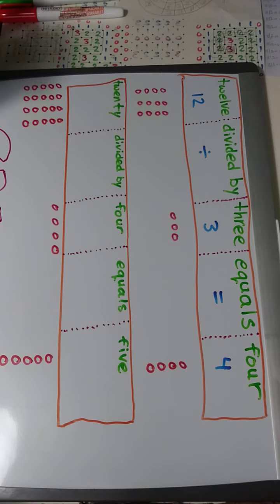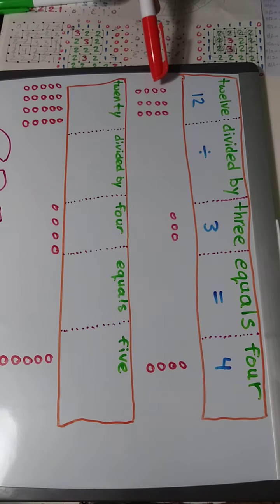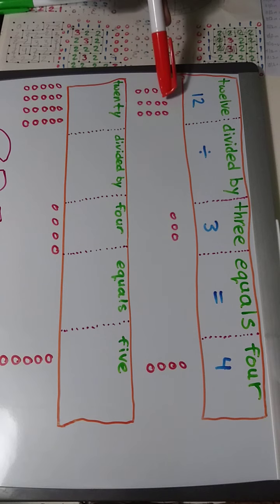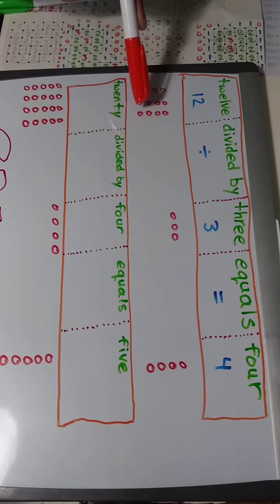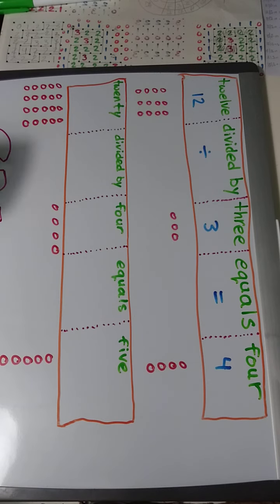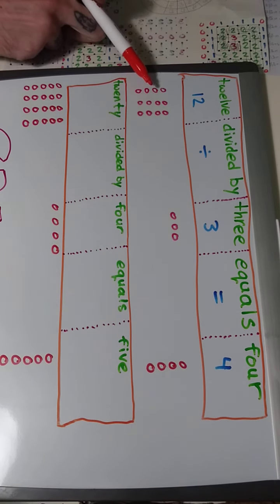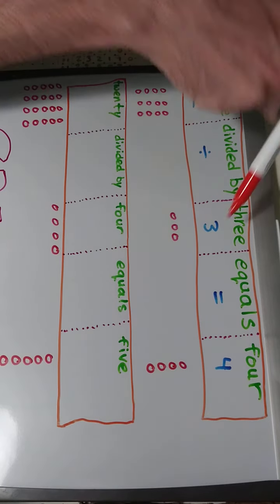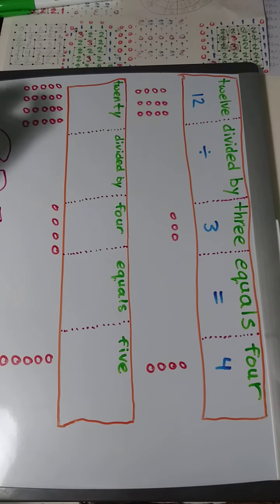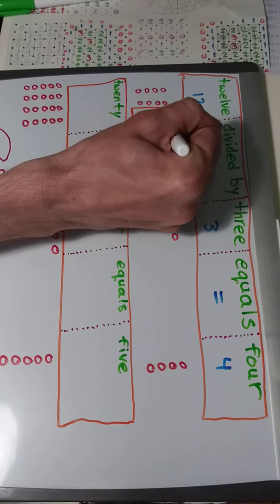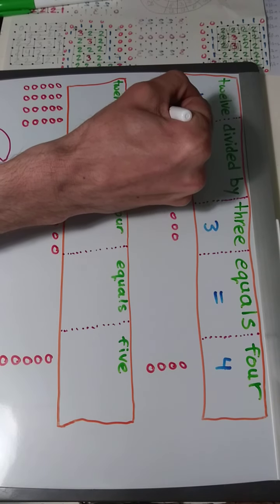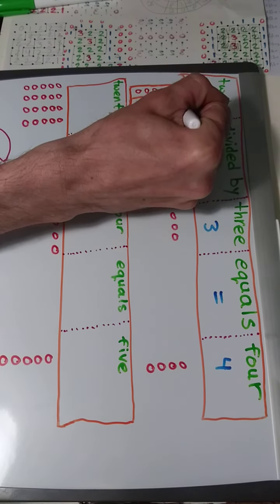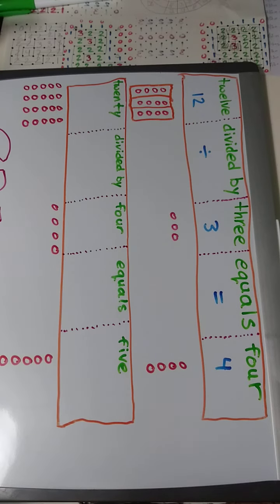So here we have 1, 2, 3, 4, 5, 6, 7, 8, 9, 10, 11, 12. And we have to divide these 12 by 3. So we can do that like this: 1, 2, 3. Now we have this 12 divided into 3 different boxes.